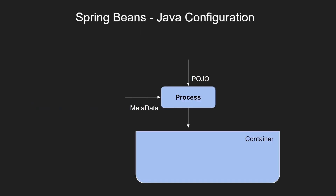Whenever we start the application, the application context creation takes place, and during this application context creation, the Spring beans are also created. It takes a POJO class and metadata information, processes that information, and creates the objects within the Spring container.